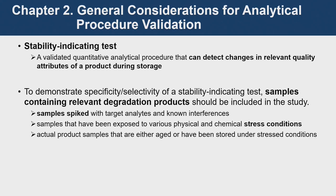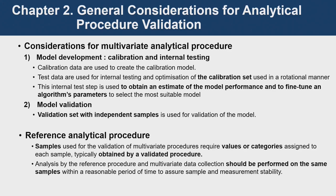In order to see if a test is appropriate as a stability indicating test, testing would be done with samples that contain relevant degradation products. There could be spiking, and there could be stress conditions applied to samples — those are examples of such samples. A multivariate analytical procedure has also been added, with two steps: model calibration and model validation.